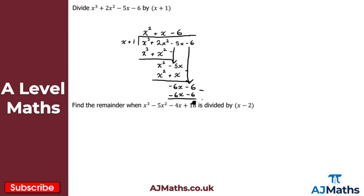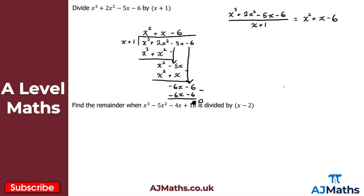We get zero for the final constant term, which tells us the remainder is zero. So dividing x cubed plus 2x squared minus 5x minus 6 by x plus 1 gives us the quadratic x squared plus x minus 6, with a remainder of zero.